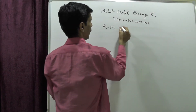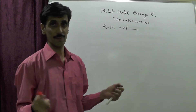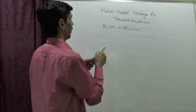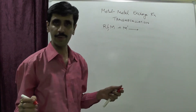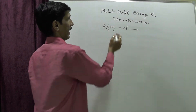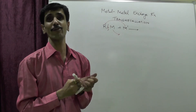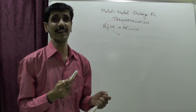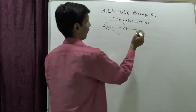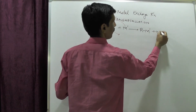We treat R-M with M'. To understand the products: the bond between R and M breaks, M is displaced, and M' forms a bond with R. This gives us R-M' plus M. The new organometallic compound formed is R-M'.